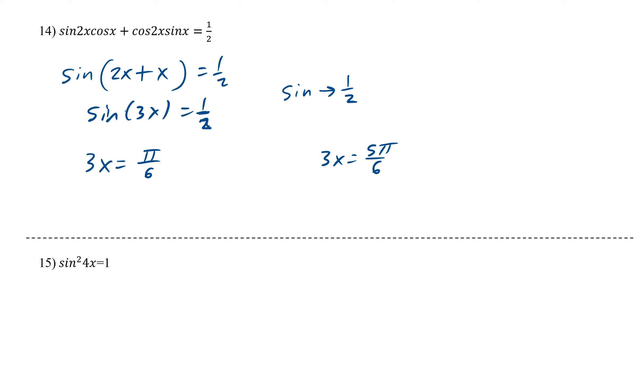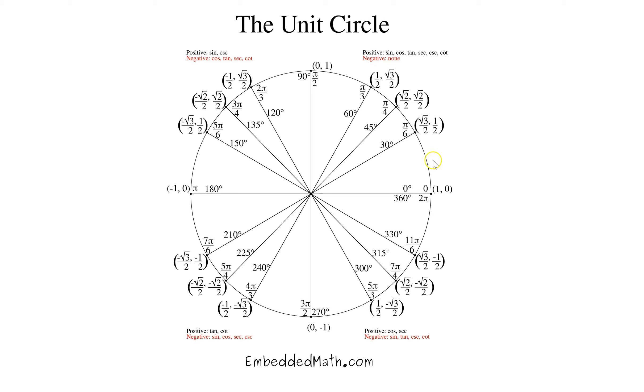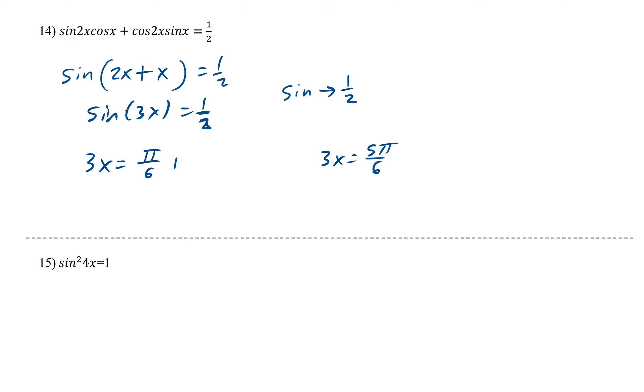Now this would be it if it was just 0 to 2π. But we are doing all of them. So it's π over 6 plus 2π, and 5π over 6 plus 2π. We need all of them, plus 2πk plus 2πk. Since there's a 3, we divide everything by 3. So we have x equals π over 18 plus 2π over 3k, and x equals 5π over 18 plus 2π over 3k.